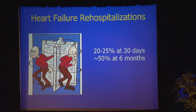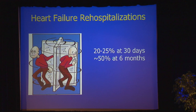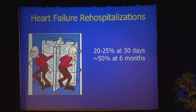But for the purposes of today, the question is: is there prognostic utility in these rehospitalization rates? We all know that the rates are about 20 to 25% at 30 days, and almost half our patients will be readmitted within six months. The question is, does that identify a high-risk patient population or not?